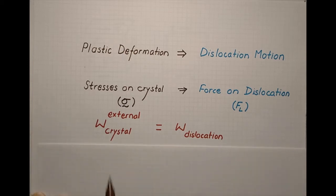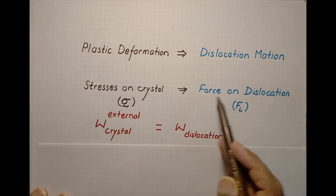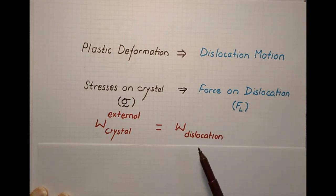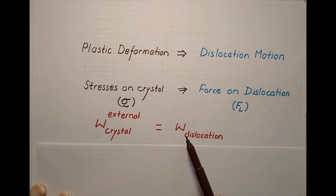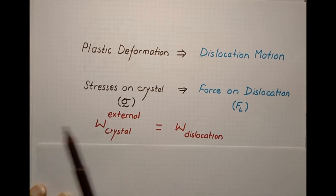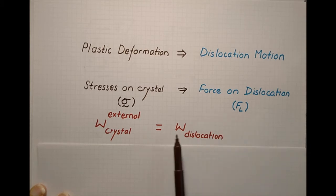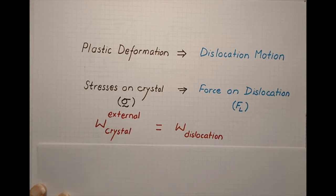To develop this idea, we want to represent this force and make its physical meaning clear. When the force moves the dislocation it will do some work W_dislocation — this force multiplied by the displacement of the dislocation. The external stresses, while deforming the body, also do work on the crystal. We define FL such that W_dislocation equals the work done by external forces on the crystal. This is the defining relation for FL.